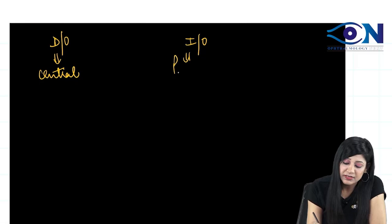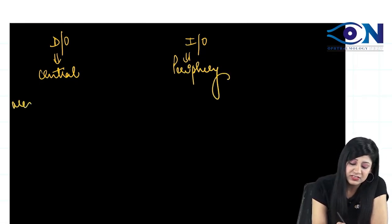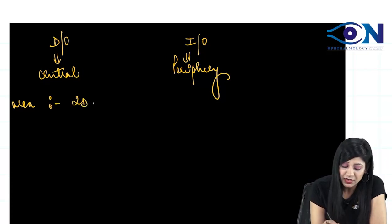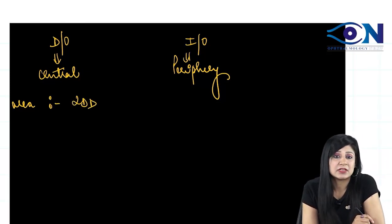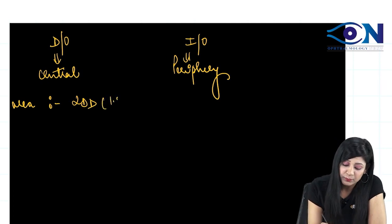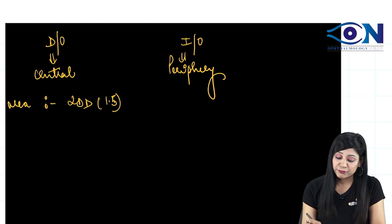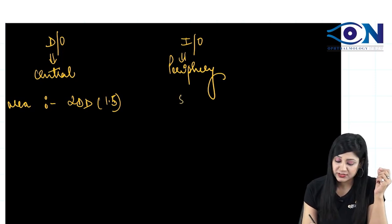While it is the indirect basically which is used for the periphery because the area which is seen by direct is very small, just 2 disc diameter. It is just the 2 disc diameter and 1 disc diameter is 1.5 mm. This is 1.5 mm. Now, periphery you can see much larger. This is your 8 disc diameter.